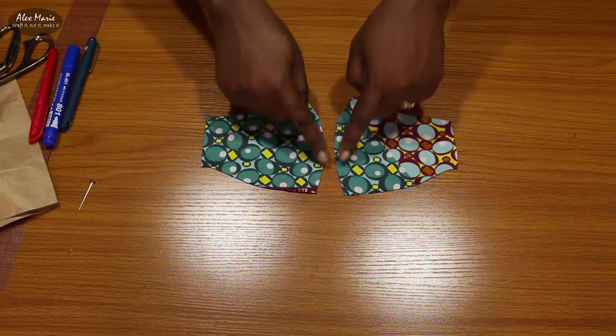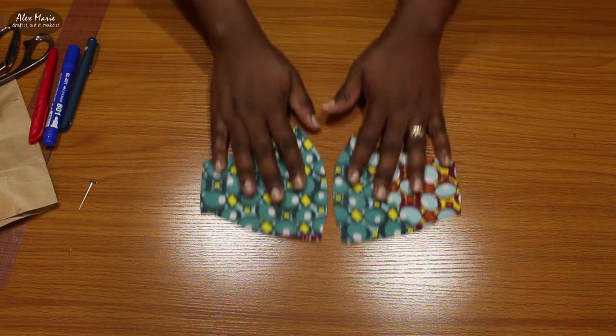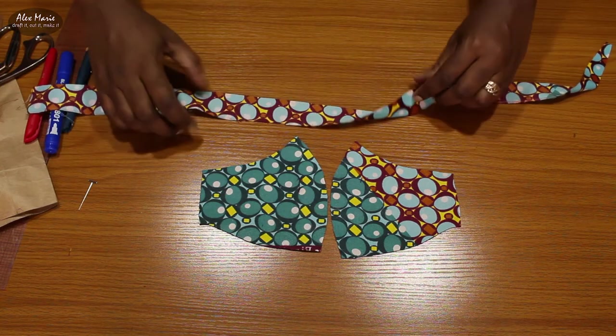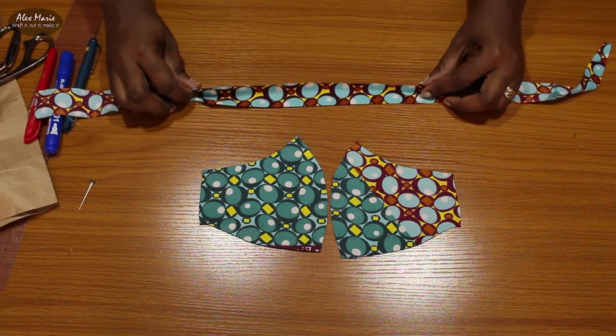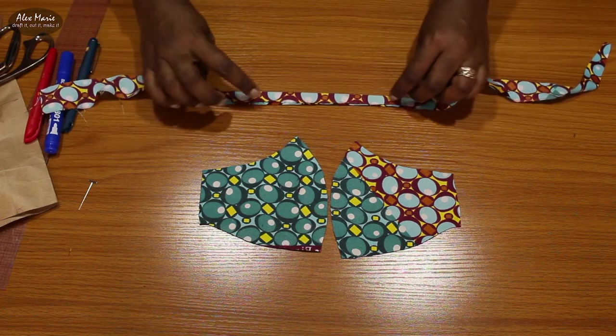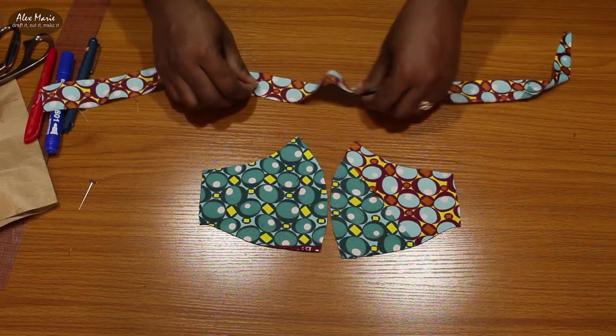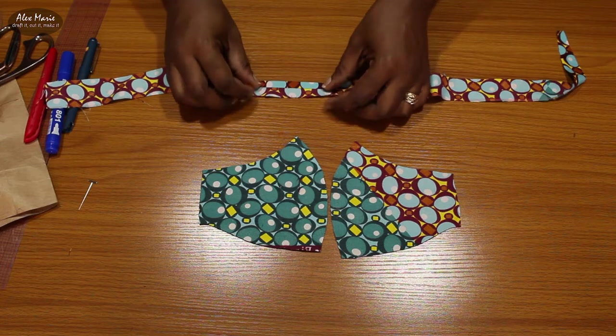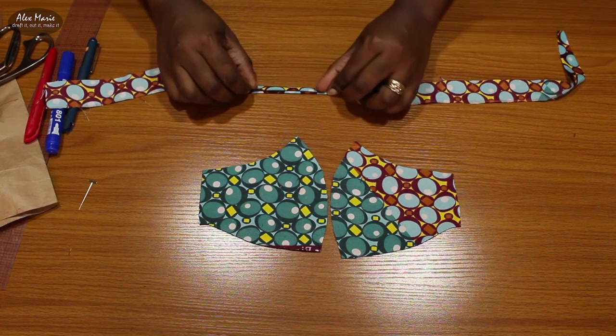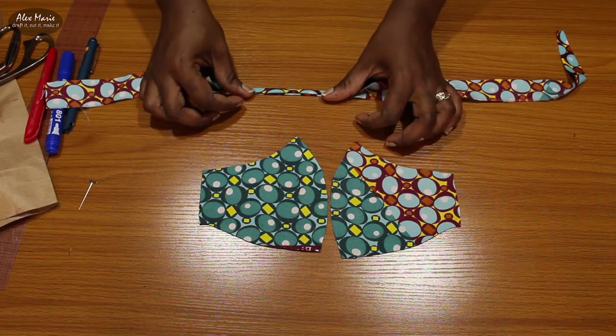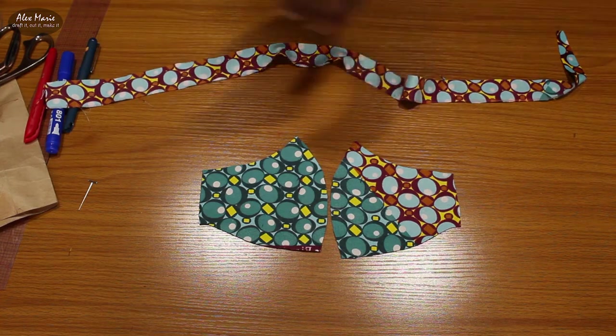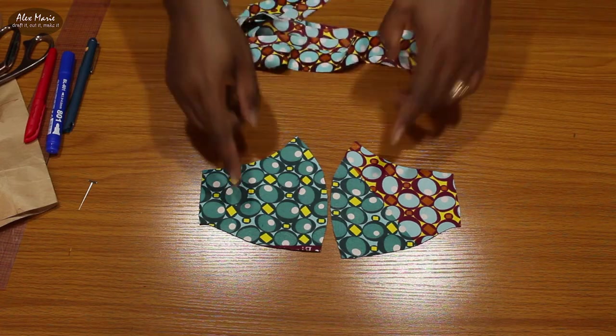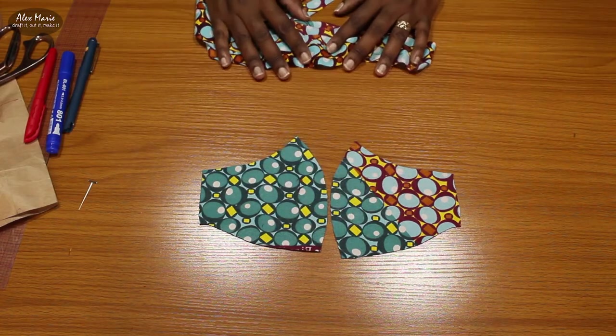For the mask the first thing I'm going to do is sew the center front together, and then I'm also going to take the strips right sides together, fold them in and sew. Or alternatively you can do it like this way, just fold them in, fold them in like this and top stitch, which is what I'll probably just do just to get them into a tidy fashion. So I'm going to do that to the straps and I'm going to sew the center front of the mask.